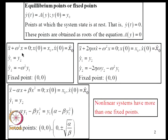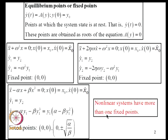For an undamped single degree-of-freedom system the origin is a fixed point; similarly for a damped single degree-of-freedom system. For a system with negative linear elastic stiffness and positive cubic nonlinear stiffness, the origin is a fixed point and there are also a pair of fixed points located elsewhere. Nonlinear systems have more than one fixed point, whereas linear systems of this kind exhibit only one.